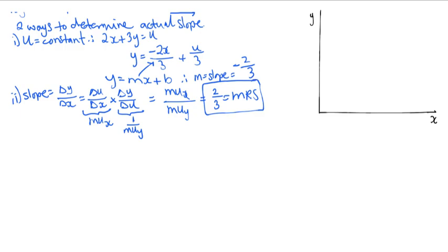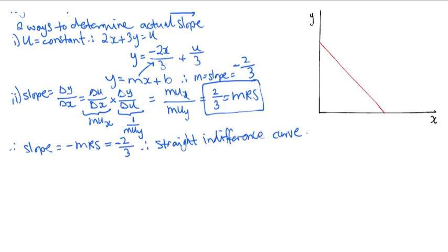Note how the MRS is constant. In other words, the slope is constant. The indifference curve is a straight line. The y-intercept can be determined by setting x equals 0 in the utility function and solving for y, and vice versa for the x-intercept.